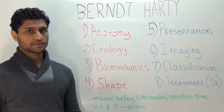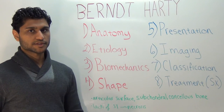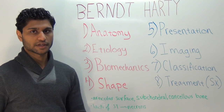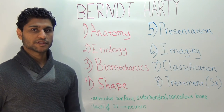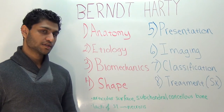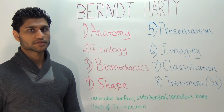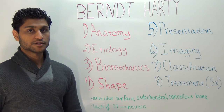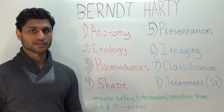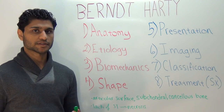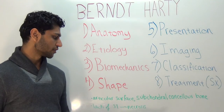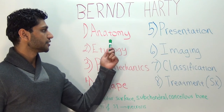The Berndt and Harty classification describes osteochondral defects, or OCDs, of the talar dome. An OCD lesion can cause injury to the articular surface, subchondral bone, or the cancellous bone. These lesions are susceptible to osteonecrosis because the compressed or avulsed fragment has a lack of significant soft tissue attachment and therefore poor blood supply.